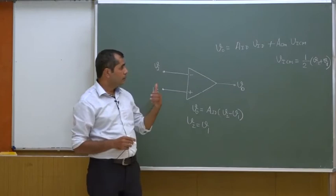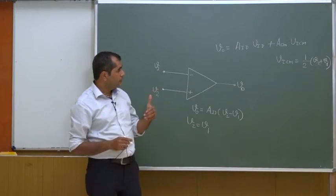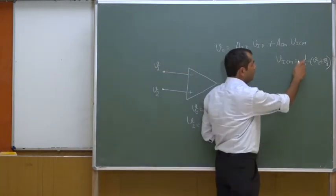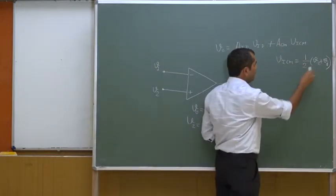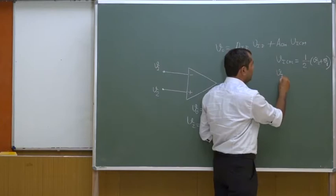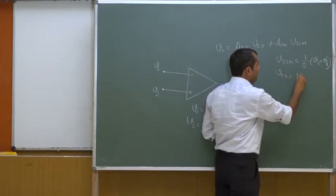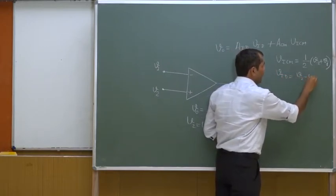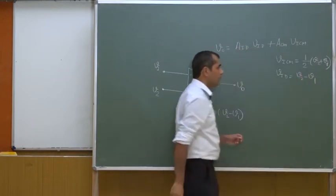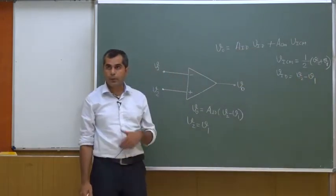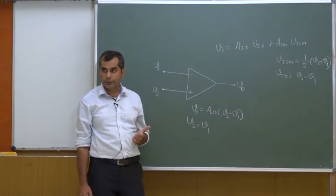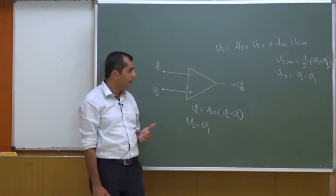V1 and V2 can also be written differently. Just as I wrote V_icm equals half of (V2 plus V1), I can write V_id equals V2 minus V1. From these two equations, you can write down V2 and V1 in terms of common mode signal V_icm and differential mode signal V_id.